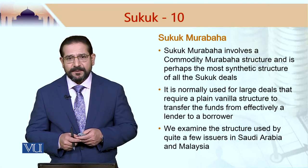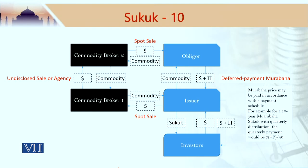Let us look at a basic structure of sukuk murabaha. Central to this structure remains an issuer, which could be an SPV. In Malaysia, a number of sukuk murabaha deals do not require setting up an SPV, but for the cleanliness of the structure, it is always advised that the issuer should be a special purpose vehicle set up for the very purpose of issuing sukuk and holding sukuk assets on behalf of the sukuk investors. This issuer would issue sukuk and would receive sukuk proceeds, so the cash would come into the account of the issuer.